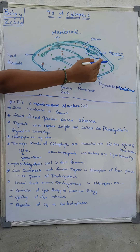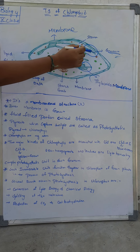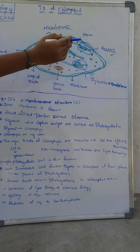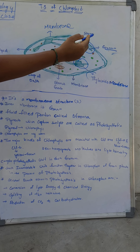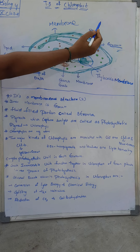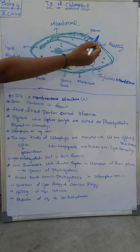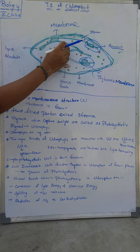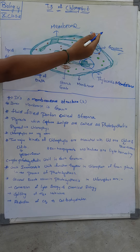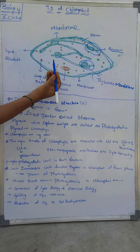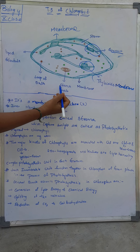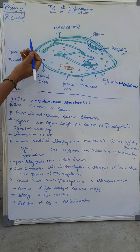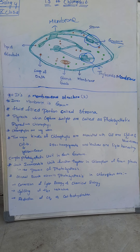What happens in the granum? In the granum, photolysis happens. Photolysis is nothing but converting light energy into chemical energy. The fluid portion of the chloroplast is called the stroma, and it also contains starch granules, a loop of DNA, and lipid globules.